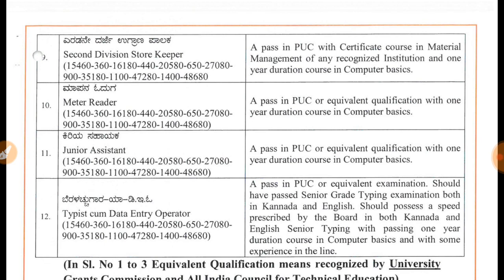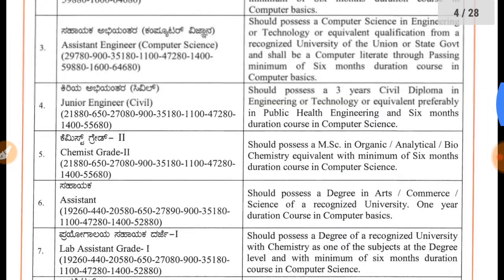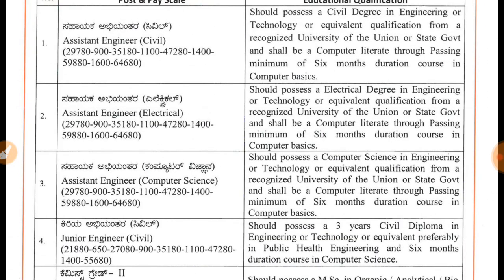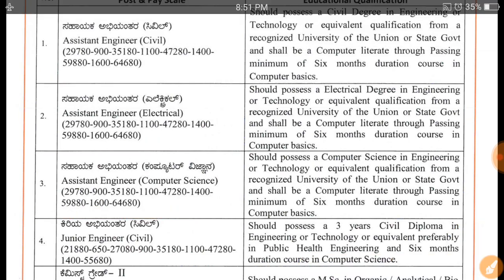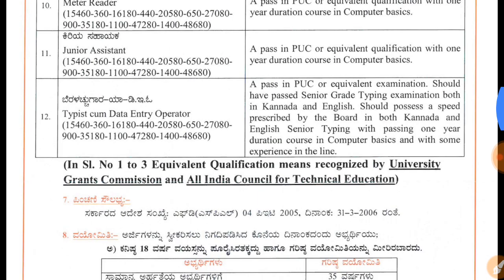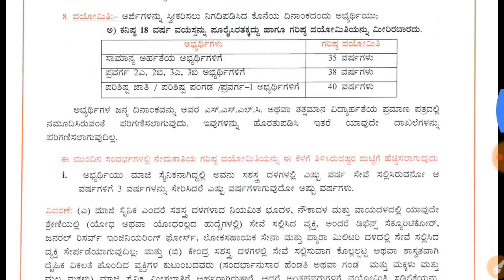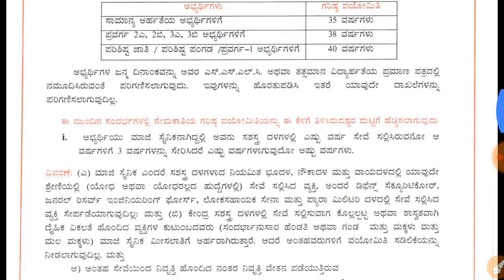Regarding salary, it is mentioned at the bottom of the notification. For Assistant Engineer Civil the pay scale is 29,780 to 64,680. Salary details for electrical and computer science posts are also given. Regarding age relaxation: the maximum age for General category is 35 years; for OBC categories 2A, 2B, 3A, 3B it is 38 years; for SC/ST and Category 1 it is 40 years.